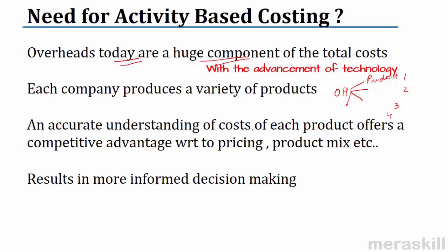Why is it important? An accurate understanding of the cost offers a competitive advantage with respect to pricing and product mix. When I make product A and product B and I think product A has the higher percentage of cost but actually it is product B, all the decisions I am making would be wrong. With better allocation of cost, I might realize that product A is actually more profitable, enabling me to take more informed decisions.